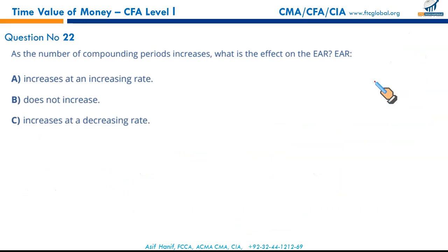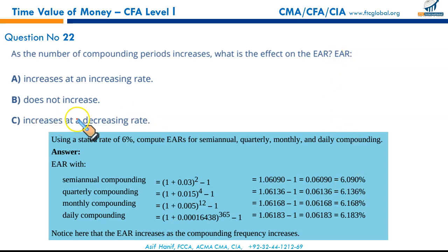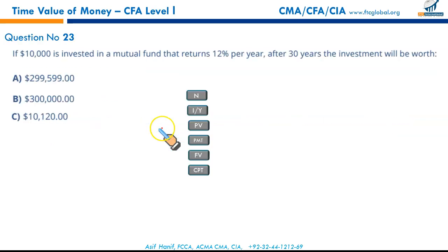Moving on to question 22: as the number of compounding periods increases, what is the effect on the effective annual rate? It increases — but it increases decreasingly, at a decreasing rate. So the answer is C — increases at a decreasing rate.